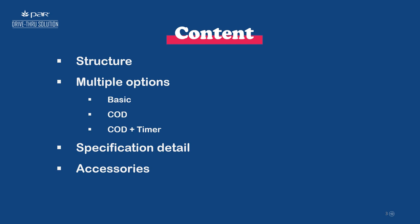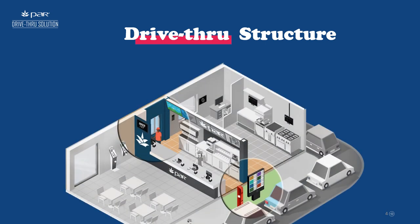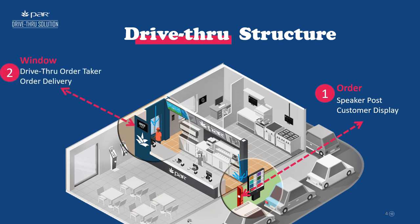If you are going to build a drive-through for your restaurant, the first main important part is the order point, where we fix a speaker post for the customer. Here they can speak their order and listen to the drive-through order taker who is taking orders from inside the restaurant. We can put multiple options on a drive-through with screen or without screen, but the minimum requirement is a speaker and mic.